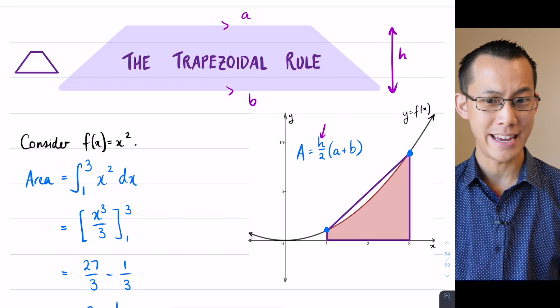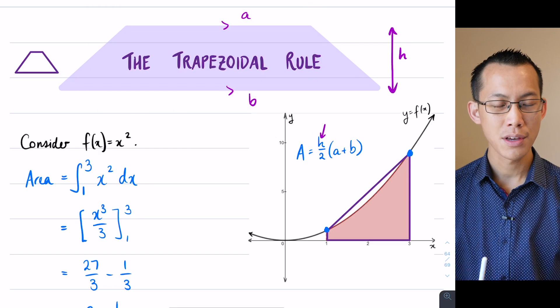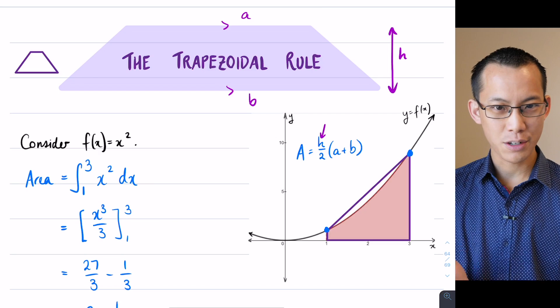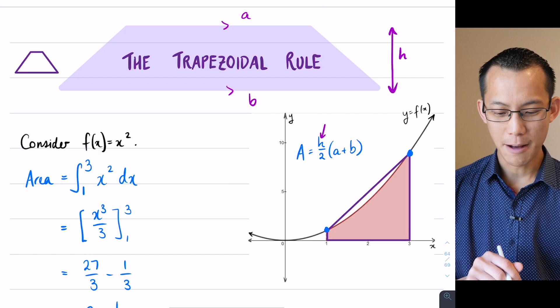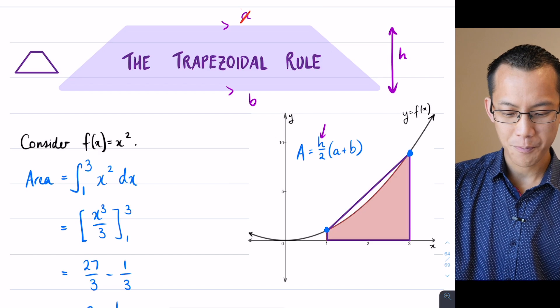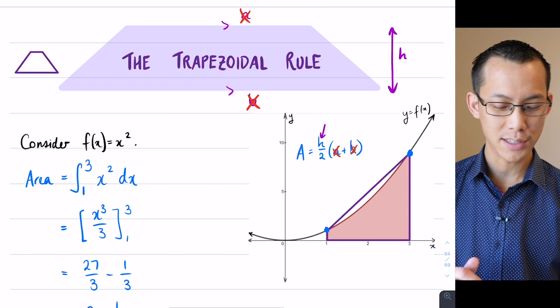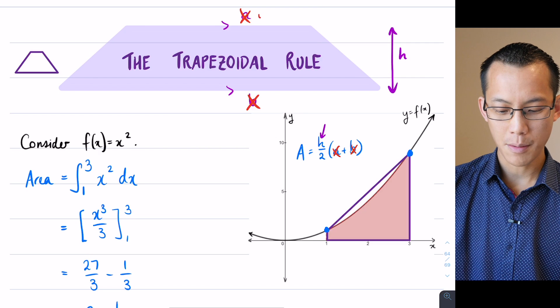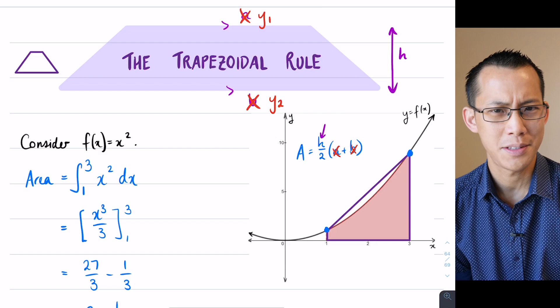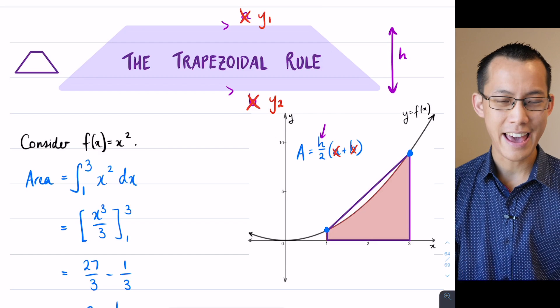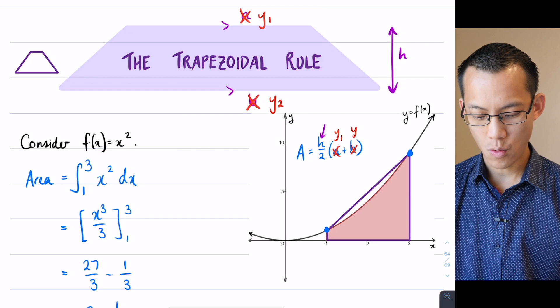Now what I'm going to do here, and you'll see why this is going to be useful later, is I'm not going to call them a and b anymore. The reason being, when we look at integral calculus, we tend to use a and b for other things - we tend to use them for boundaries. So I'm going to stop using a and b now. Instead of a and b, and you'll see why I do this in about 60 seconds, I'm going to replace them with two different names - I'm going to call them Y1 and Y2.